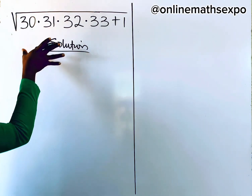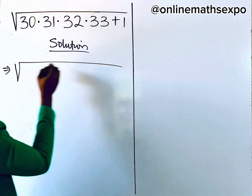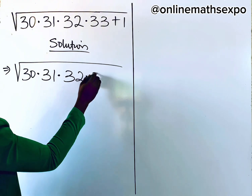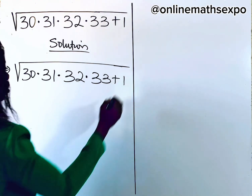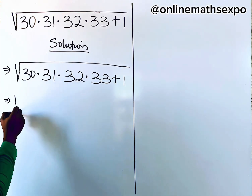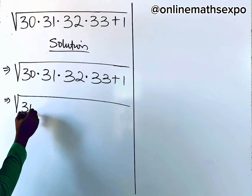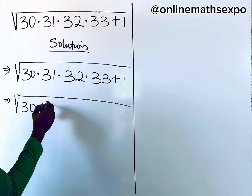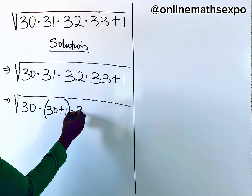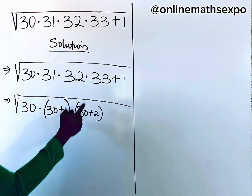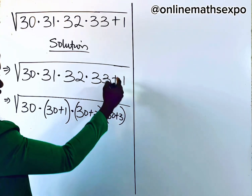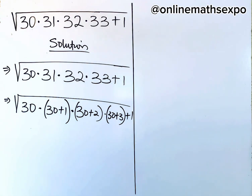So this is what we have. We have the square root of 30 multiplied by 31 multiplied by 32 multiplied by 33, then add 1. Now, 31 is the same as 30 + 1, 32 is the same as 30 + 2, and 33 is the same as 30 + 3, then plus 1.